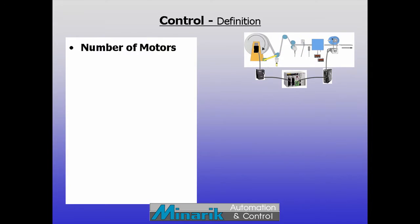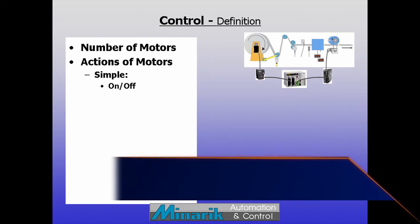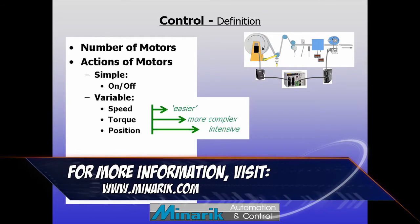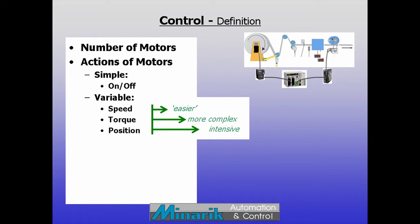Specific factors to define include the number of motors that will be used, the type of actions they'll perform—simple on-off, variable speed, torque, or position. Variable speed is easier, variable torque more complex, and positioning is a science all its own.